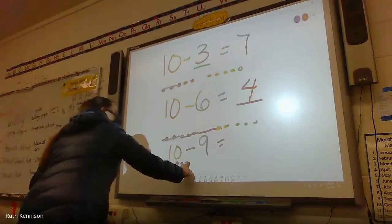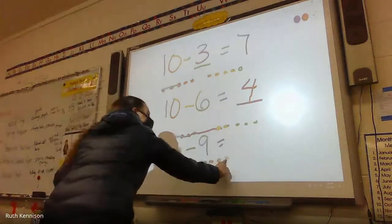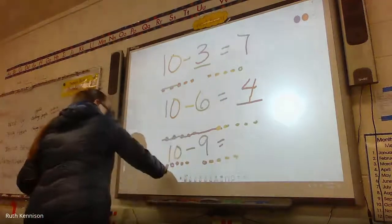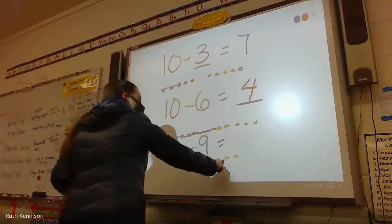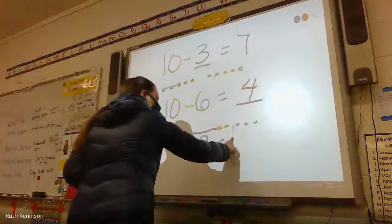We're going to do our picture. One, two, three, four, five, six, seven, eight, nine, ten. And we're going to cross that nine. One, two, three, four, five, six, seven, eight, nine. We have one left over.